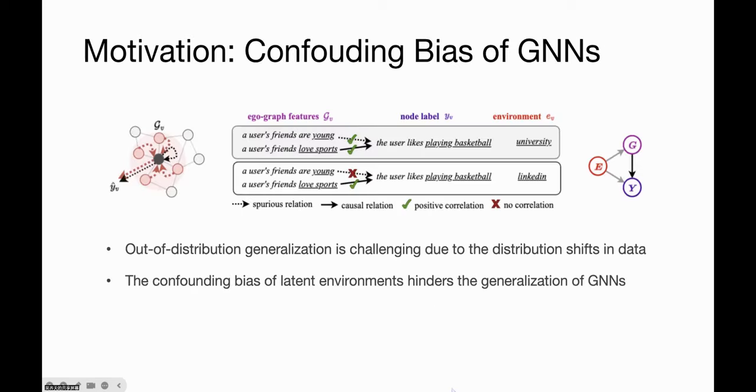For graph structured data, one key challenge concerning graph representation learning is how to enable the model, for example graph neural networks, for out-of-distribution generalization when there exist distribution shifts between training and testing data. In this paper, we identified that the confounding bias of latent environments in data would hinder the generalization of graph neural networks.